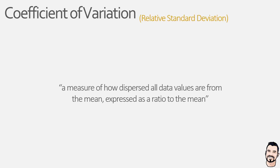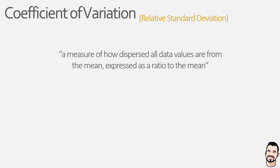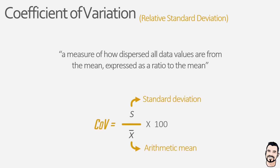So how do we go about calculating the coefficient of variation? We need to have calculated our arithmetic mean and the standard deviation of our data set, be that the sample or population standard deviation. We then use the following relatively easy equation where we divide the standard deviation by the arithmetic mean and multiply by 100, which effectively gives the coefficient of variation as a percentage. To help make sense of this we are going to calculate it for two example data sets.